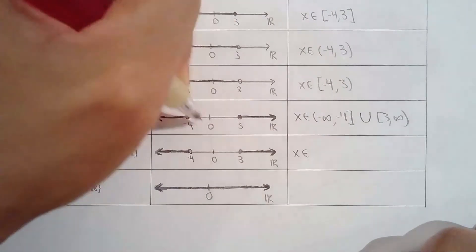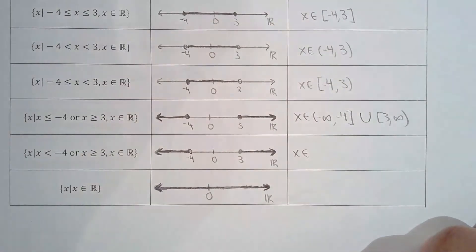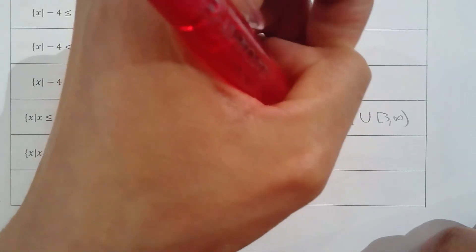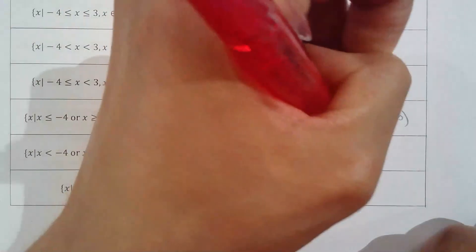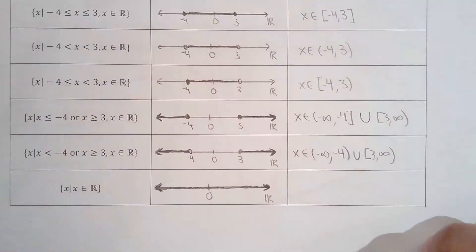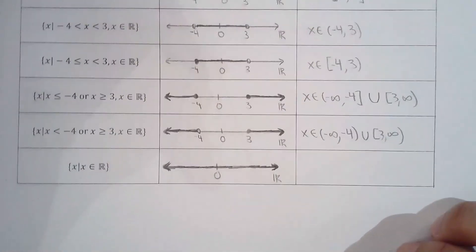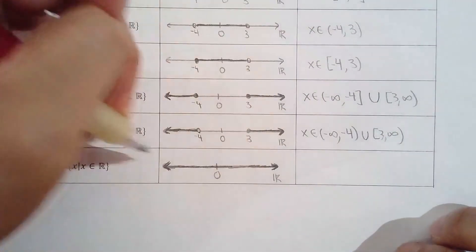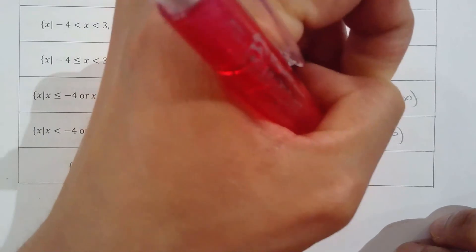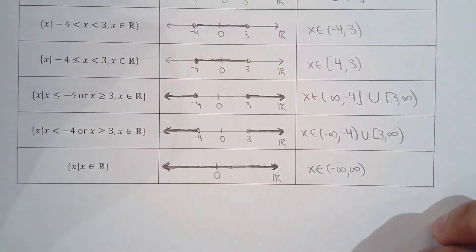So for x less than or equal to negative 4 or x greater than or equal to 3: negative infinity to negative 4 — don't include; union; 3 to infinity — include 3. And for all real numbers, this one seems straightforward: negative infinity to infinity.